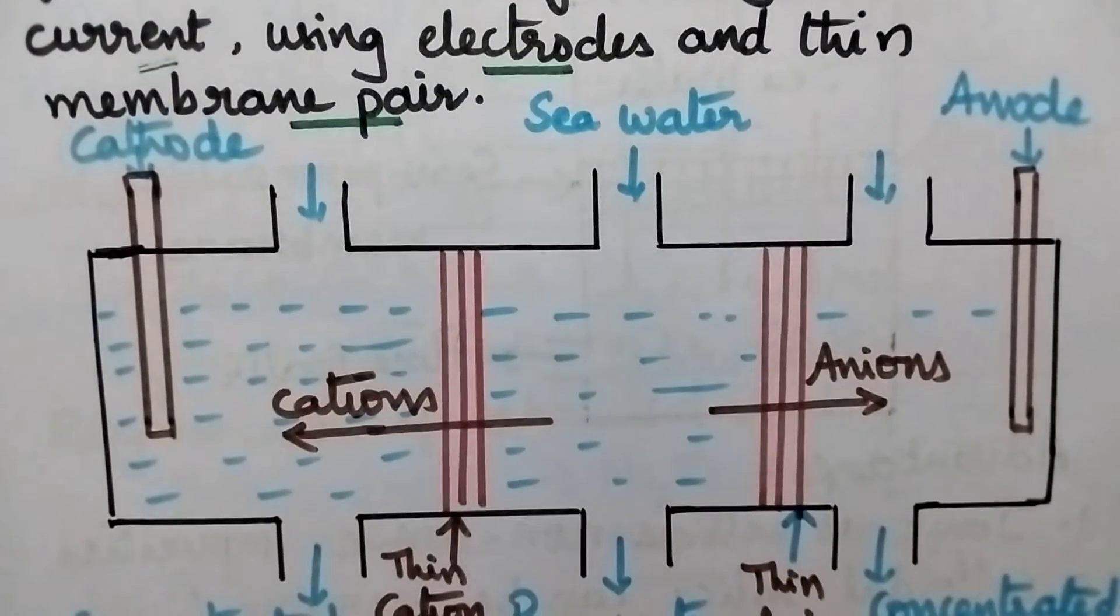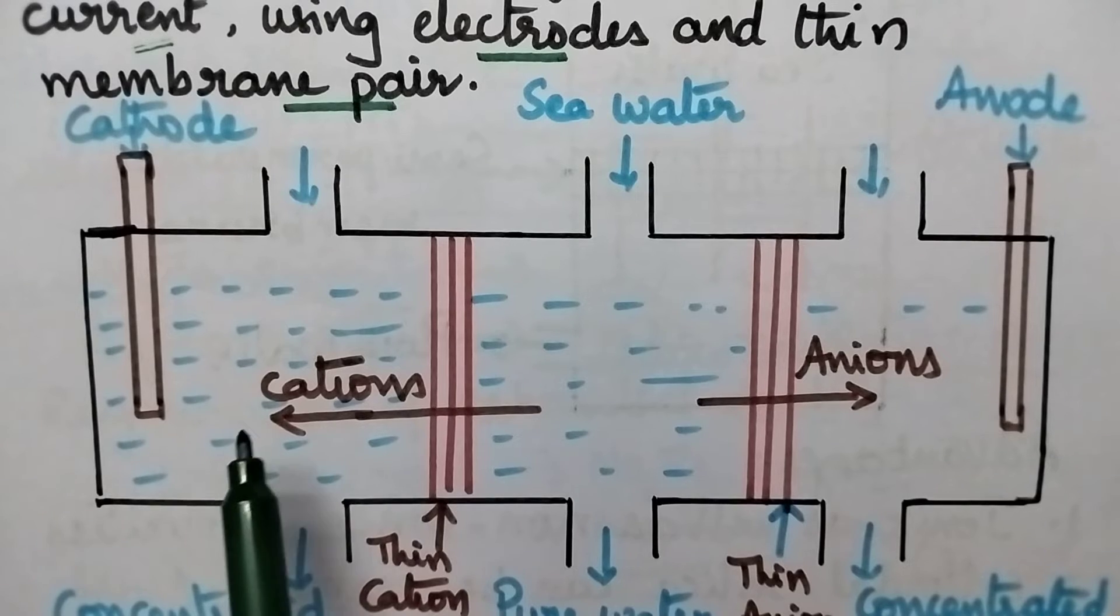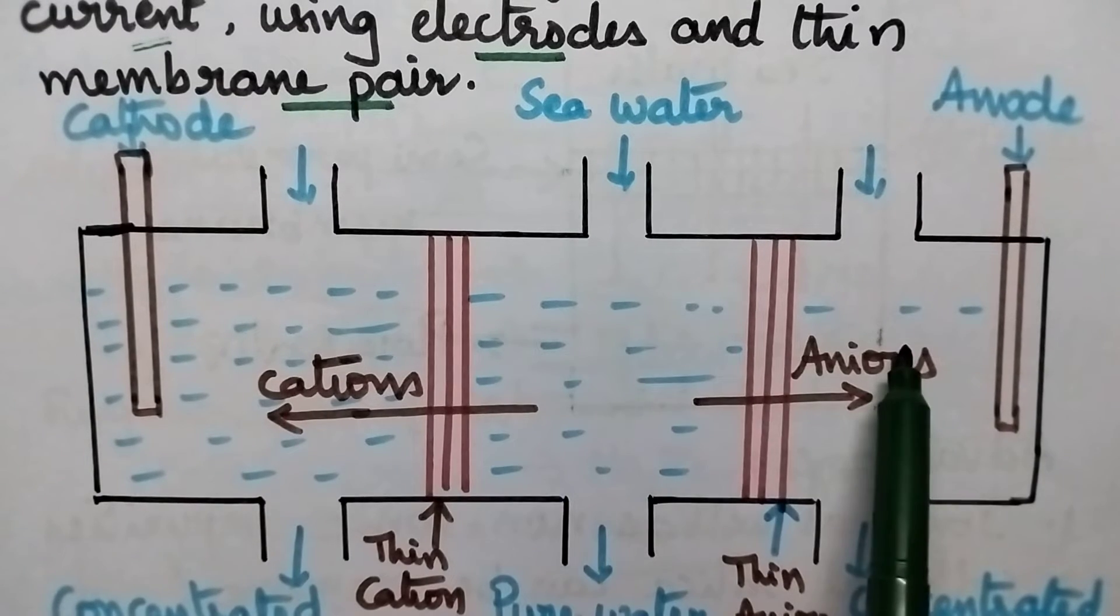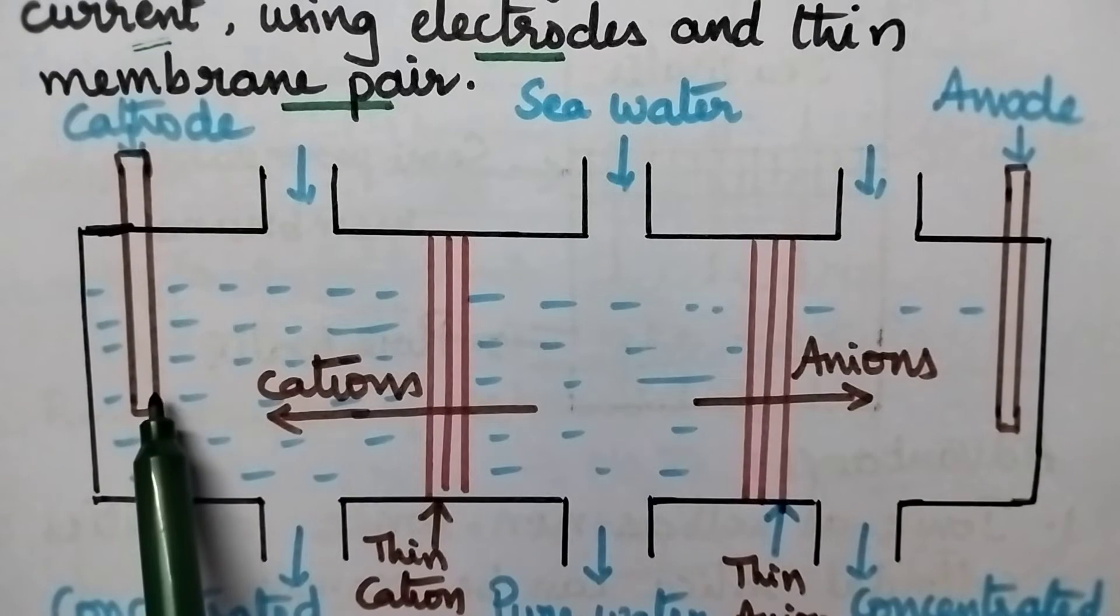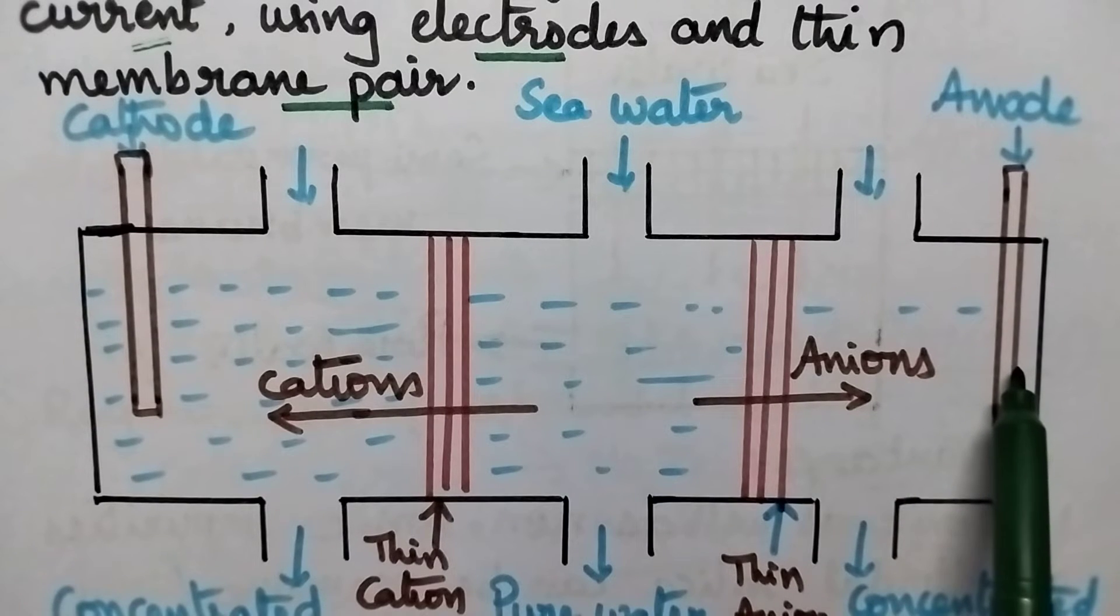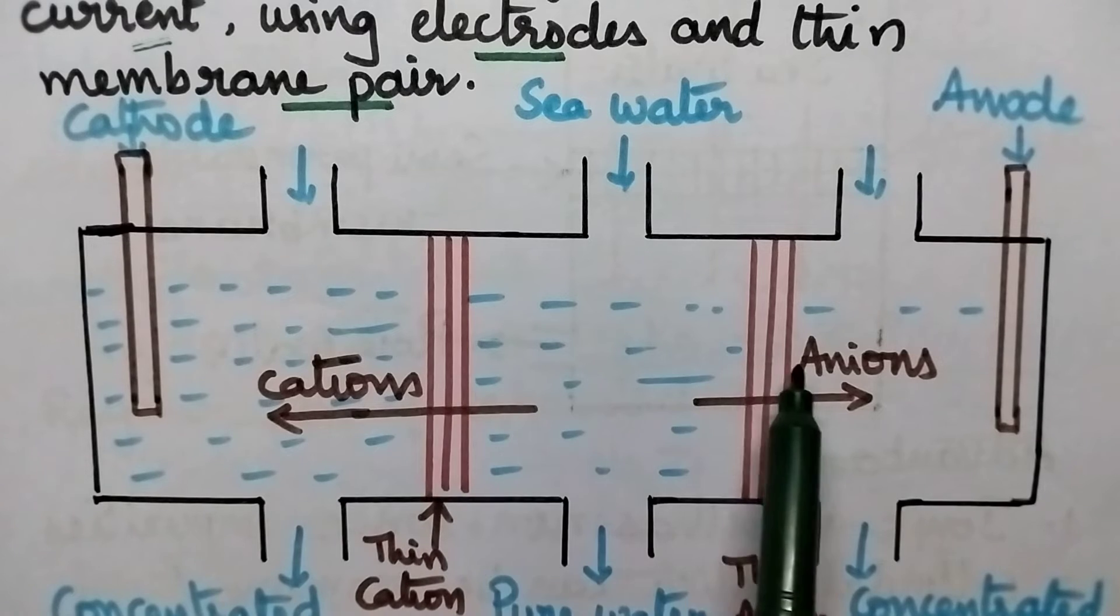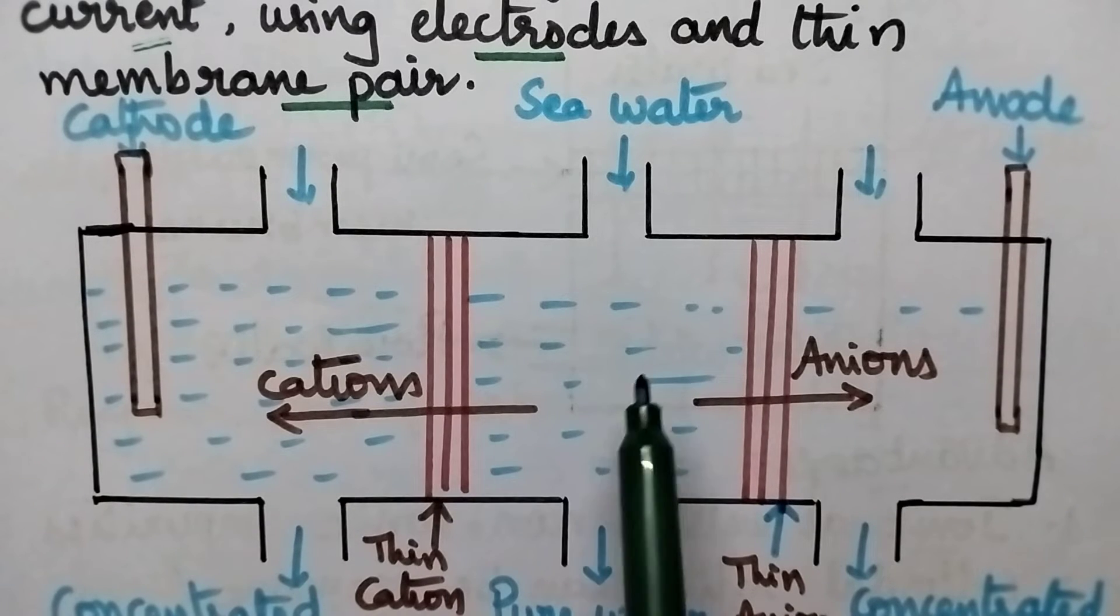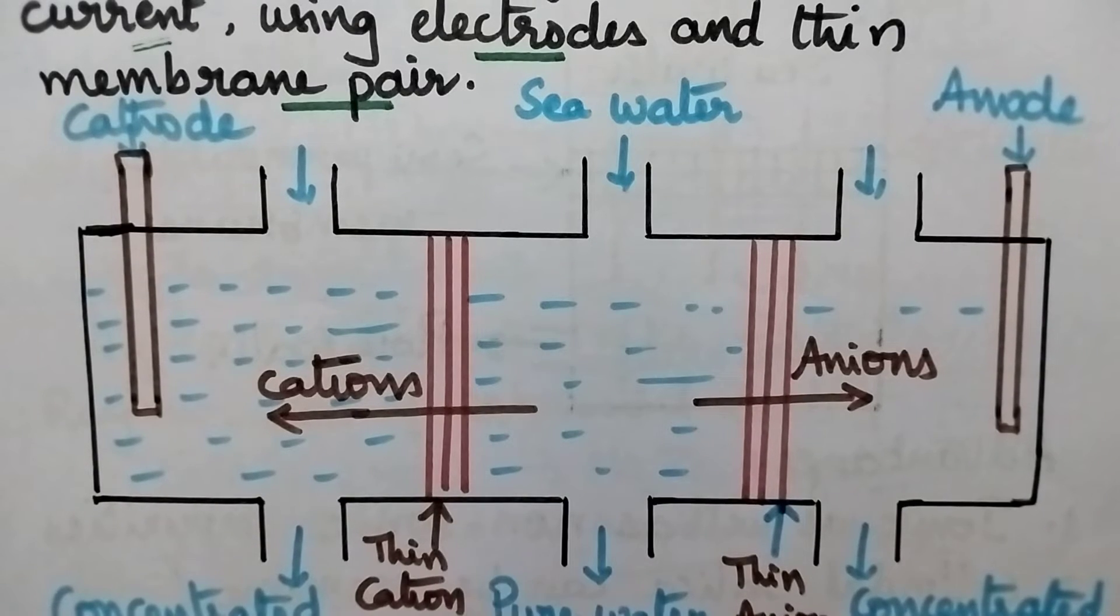Coming to the electrodialysis process, it consists of 3 compartments. The first compartment is provided with a cathode and the third compartment is provided with an anode. These 3 compartments are separated from each other with the help of a thin cation selective membrane followed by a thin anion selective membrane.